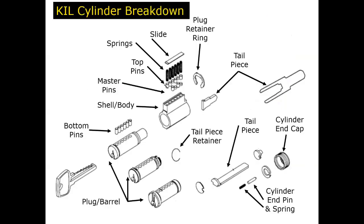Here's an exploded view of our key and lever, key and knob type cylinder. Very common parts: your barrel or plug, your bottom pins, your body or shell, associated tail pieces, pins and springs. And of course with removable core, there are also tail pieces — sometimes called pickle forks or tuning forks — shown in the upper right-hand corner.